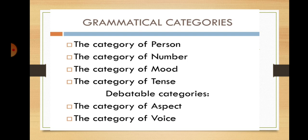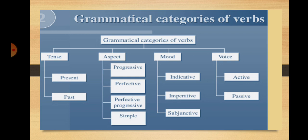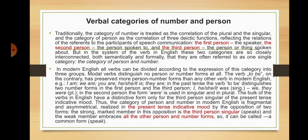The grammatical categories of tense, aspect, mood, and voice each have their own groups. Traditionally, the category of number is treated as the correlation of the plural and the singular, and the category of person as the correlation of three deictic functions reflecting the relations of reference to the participants of speech communication — the first person (the speaker), the second person (the person spoken to), and the third person (the person or thing spoken about). In the system of the English verb, these two categories are so closely interconnected, both semantically and formally, that they are often referred to as one single category — the category of person and number.